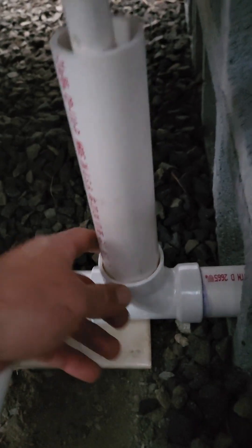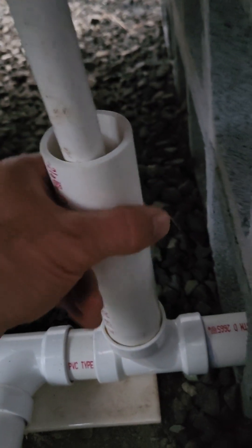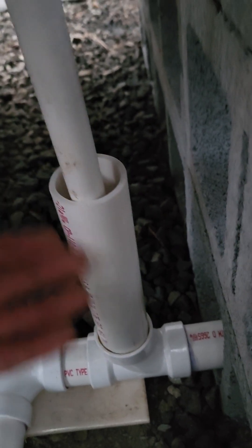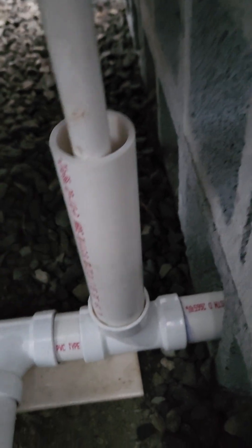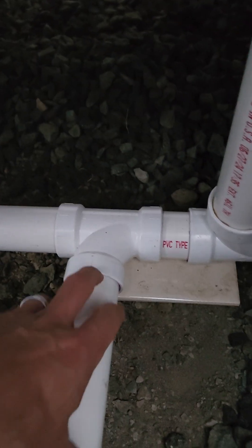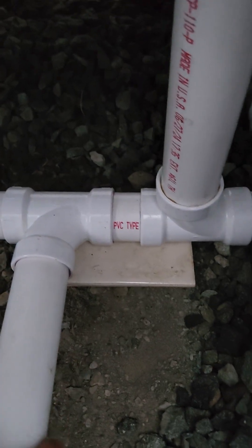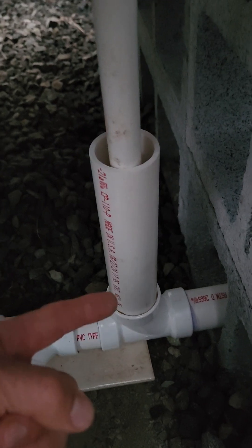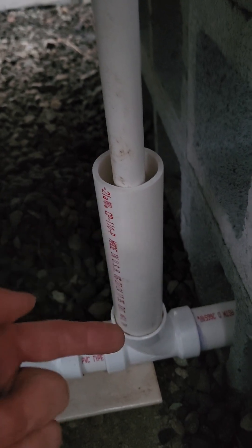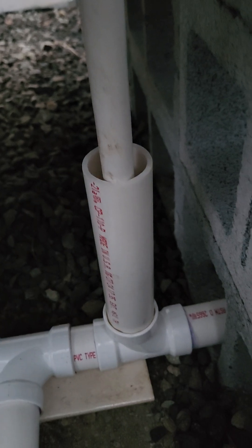So I don't see any leaks here. This part is not glued because my thinking was I could pop this off and tinker, fix things. Everything else is glued, all these joints. But I was hoping that this boot was enough to hold any water in and help it go down.